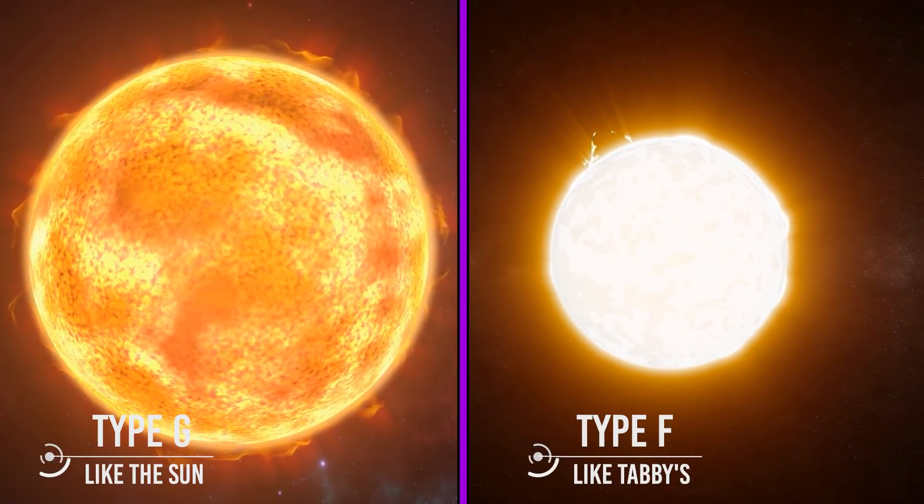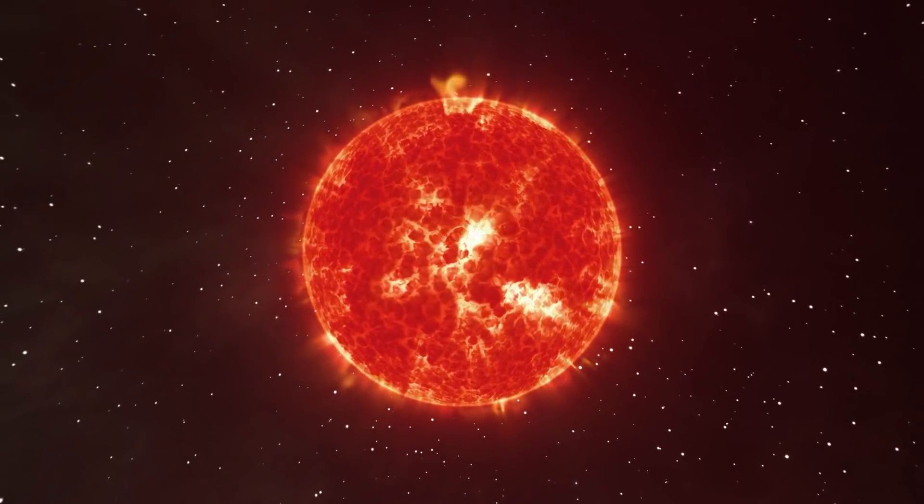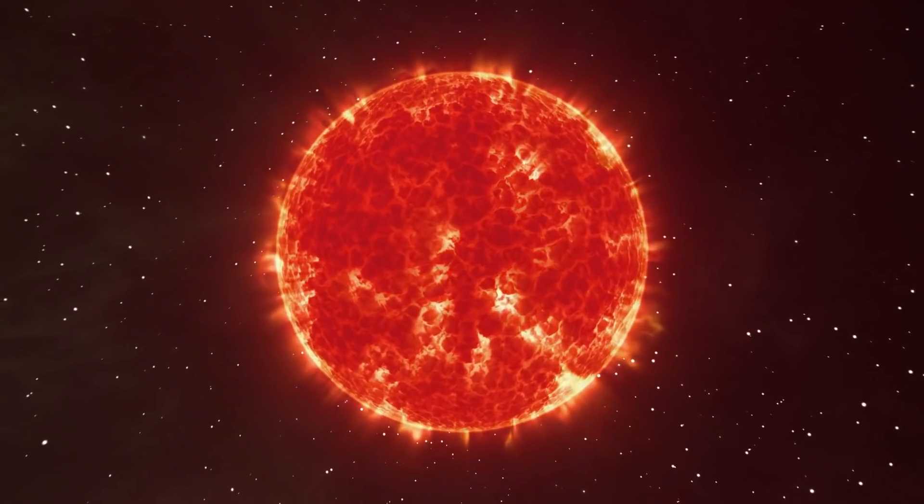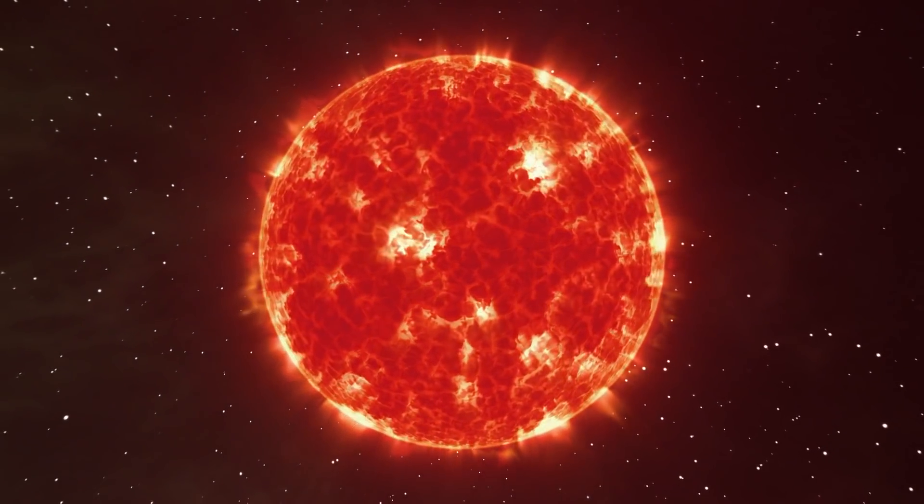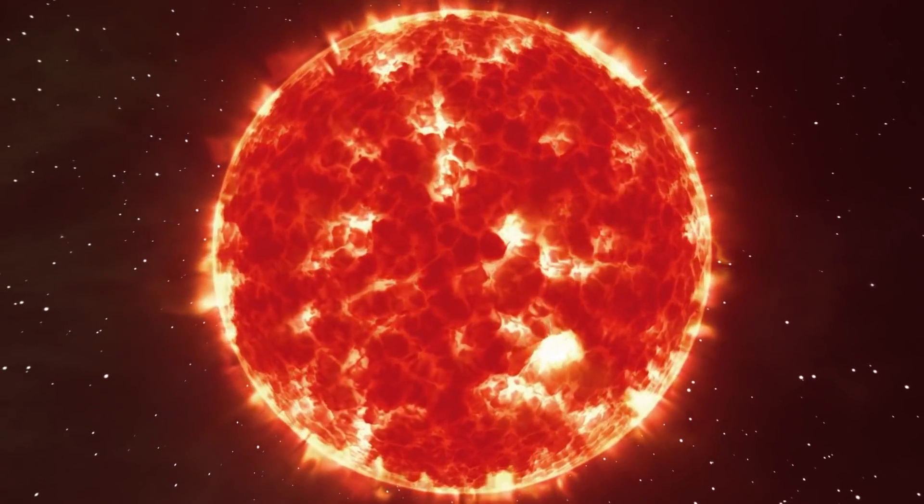This does not appear to be the case for giant or tiny stars. On the surface, this makes no sense. You'd assume it happened with orange dwarfs, red dwarfs, and all kinds of stars. However, it's possible that those sorts of stars destroy material like this more efficiently than Type F and G stars, but that's just a wild guess.